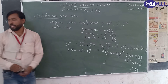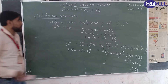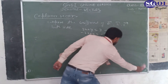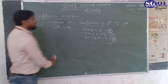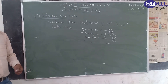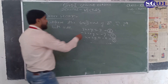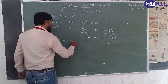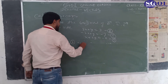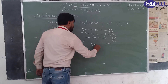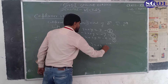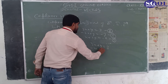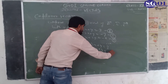Now let's solve for x and y. We subtract equation 2 from equation 1. We have 3x plus y equals 3, and minus 2x plus y equals minus 7. Subtracting these gives us the result.